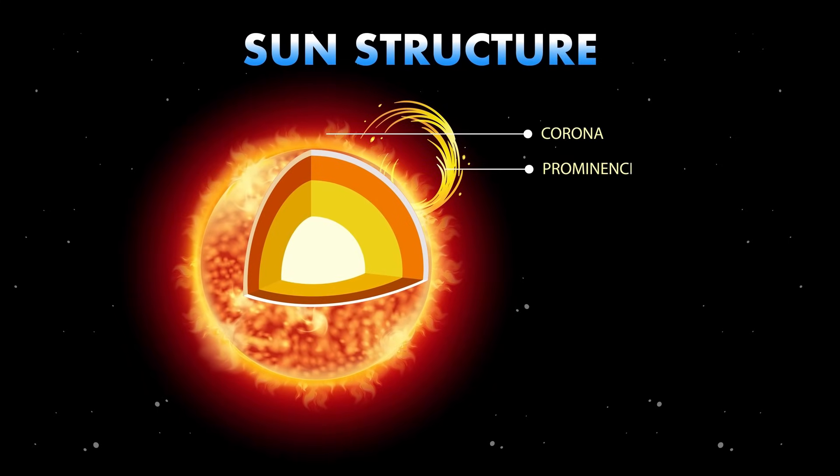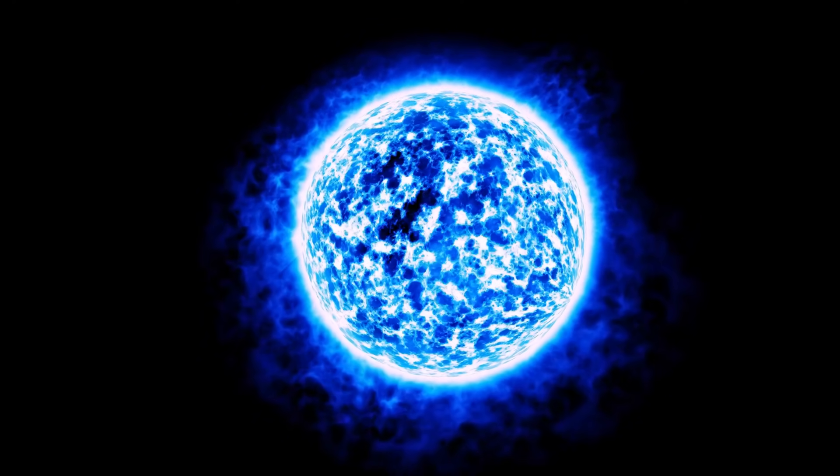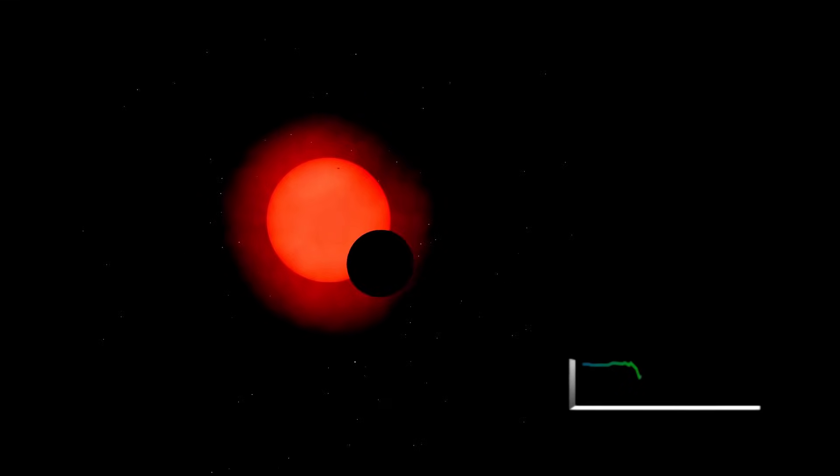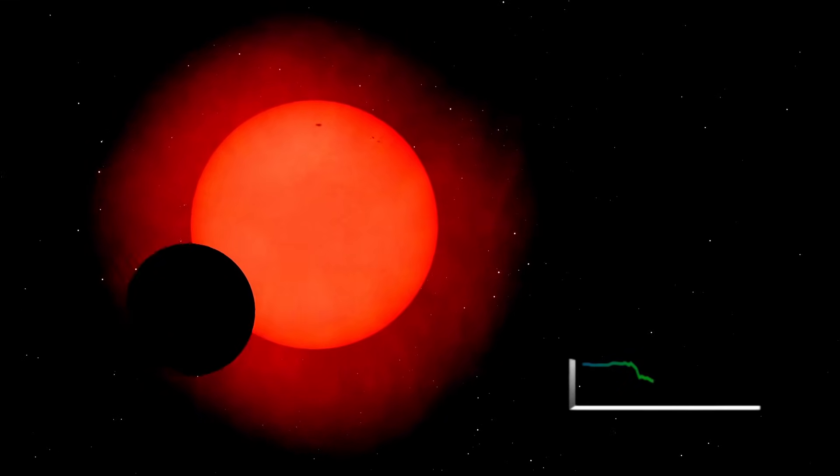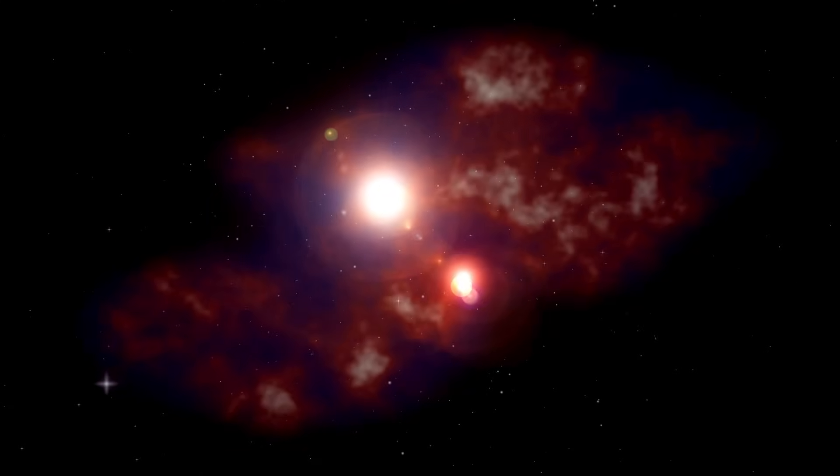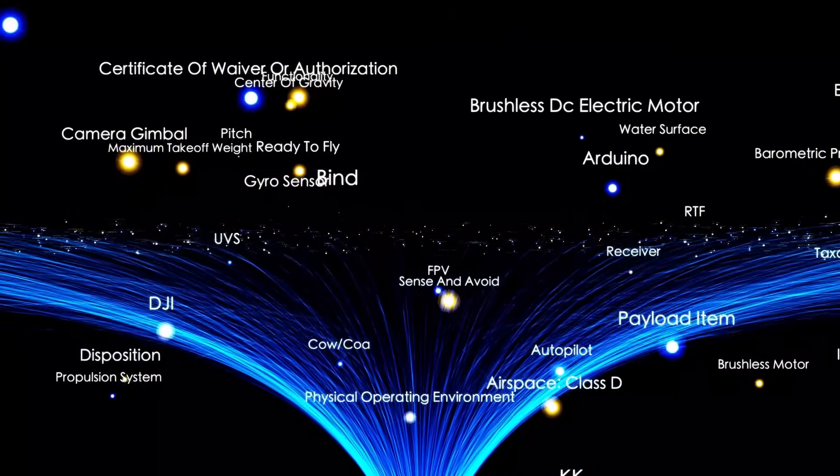The star would collapse in on itself in what's known as a core collapse supernova, an explosion so powerful it would release more energy in a few weeks than the sun will over its entire 10 billion year lifetime. During this event, Betelgeuse would briefly become as bright as the full moon, visible in the daytime sky. Despite how close it is in astronomical terms, Earth would remain unharmed by the explosion's radiation.